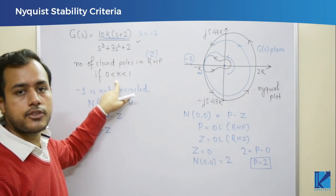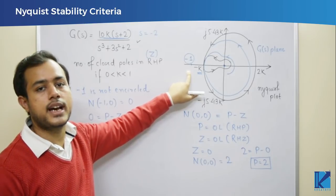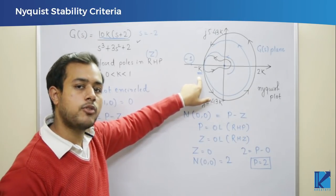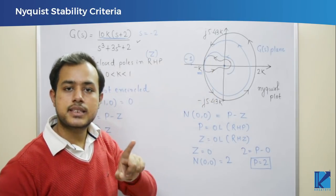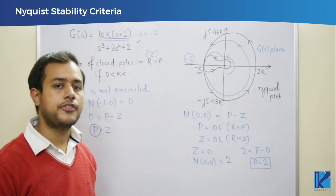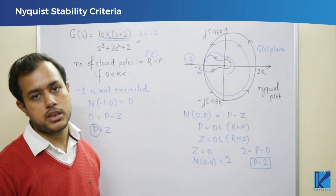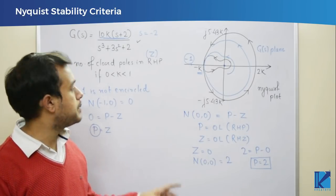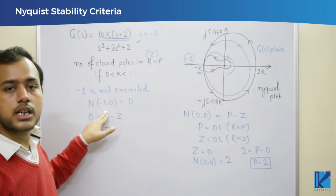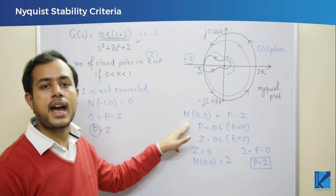It is crucial to know that k lies between 0 and 1, because that tells us the location of the −1 point and whether it is encircled. If k were greater than 1, the −1 point would fall inside, changing the result. When intersections depend on the value of K, the system is said to be conditionally stable — you must check stability based on the specific value of K. There are two Nyquist criteria: the commonly used encirclement of the −1 point, and the less common encirclement of the origin. Keep both in mind and understand the difference between them.